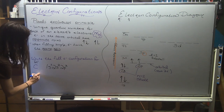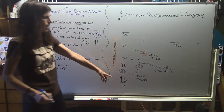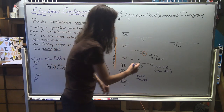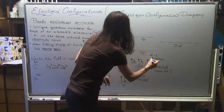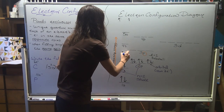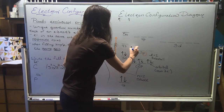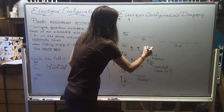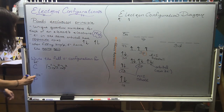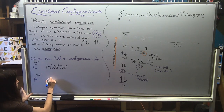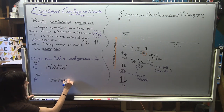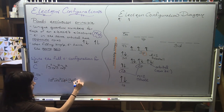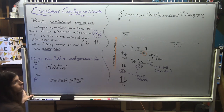Phosphorus has 15 electrons, so I'll build off the carbon example. Filling through 1s², 2s², 2p⁶, 3s², and then the 3p subshell gets the remaining 3 electrons filled singly. The full configuration is 1s² 2s² 2p⁶ 3s² 3p³ — the 3p subshell is half-filled, not completely filled.